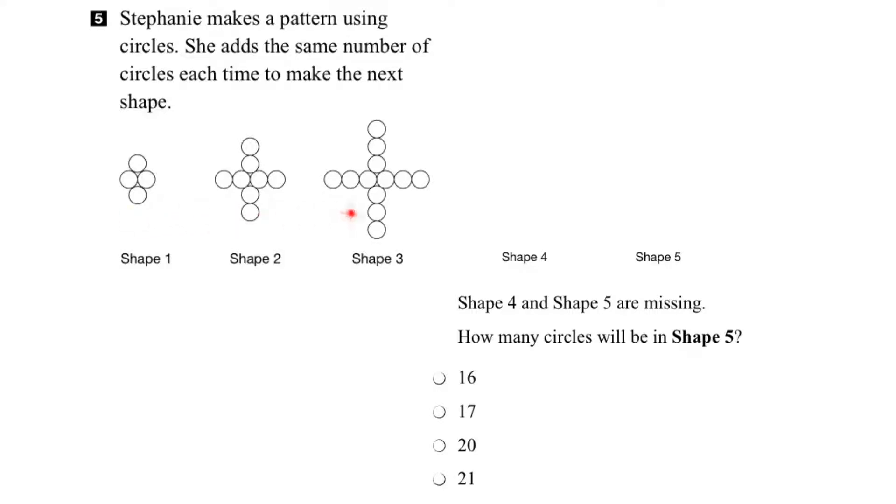In this question, we're given a pattern that grows by adding the same number of circles each time. And we're asked to find how many circles will be in shape 5.